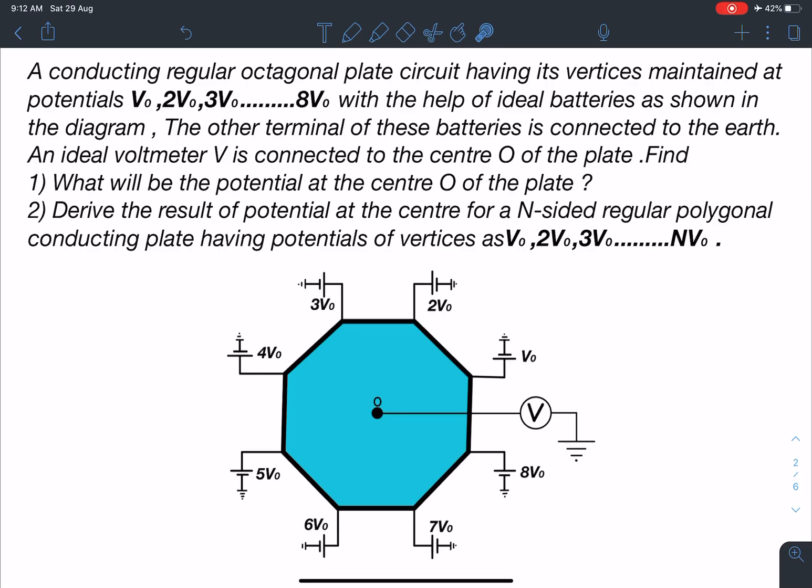So here is the statement of this problem. A conducting regular octagonal plate circuit having its vertices maintained at potentials V0, 2V0, 3V0, 4V0 like this up to 8V0 as you can see in the diagram. V0, 2V0, 4V0, 5V0, 6V0, 7V0, 8V0 is given.